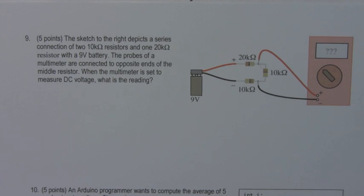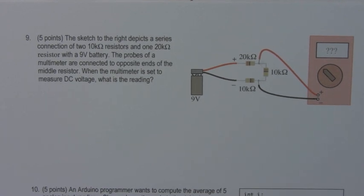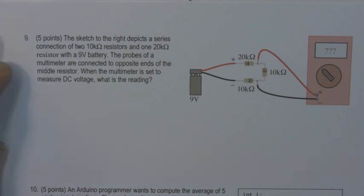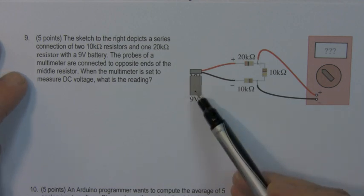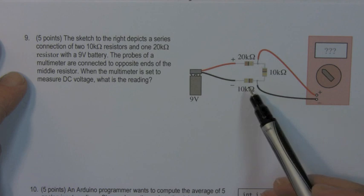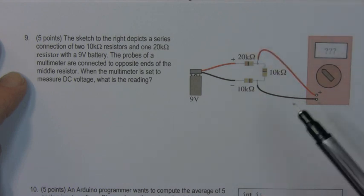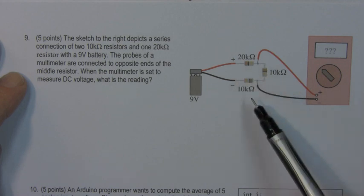Number 9. The sketch to the right depicts a series connection of two 10K resistors and one 20K resistor with a 9-volt battery. The probes of the multimeter are connected to the opposite ends of the middle resistor. So there's a 9-volt battery, there are three resistors in series, different versions of the exam have the 20K resistor in different positions, but the basic idea is the same.